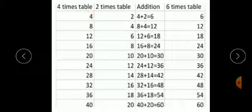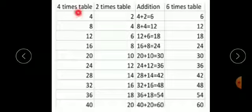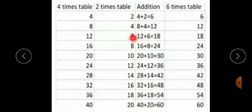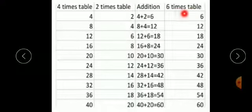Let's see the 6 times table by adding the 4 times table and the 2 times table. There are four columns: the first column is the 4 times table, the second column is the 2 times table, the third column is for addition, and the fourth column is the 6 times table. So first we write the 4 times table.